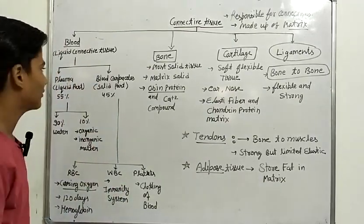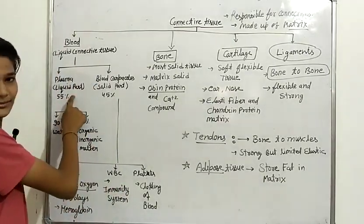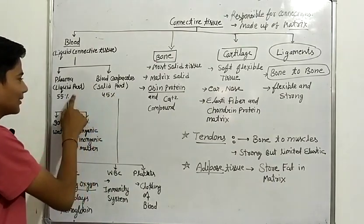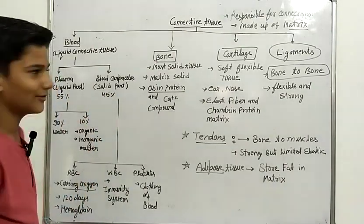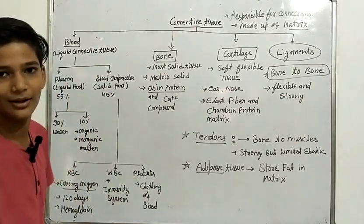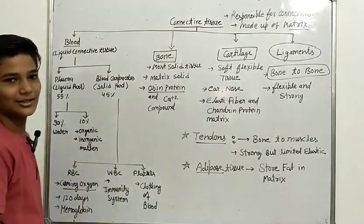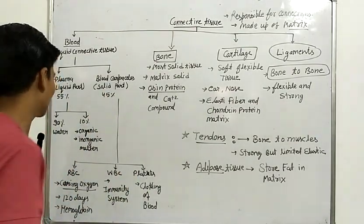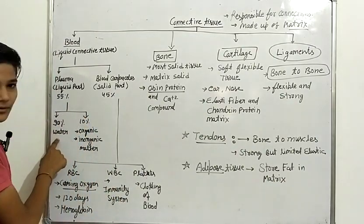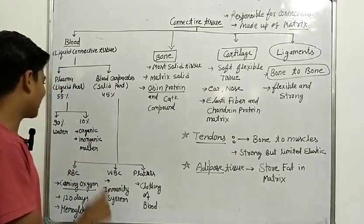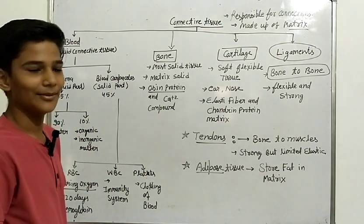Blood is made up of two parts: plasma and blood corpuscles. Plasma is the liquid part which is 55%, and blood corpuscles are the solid part which is 45%. Plasma is made up of 90% water and 10% organic and inorganic material.